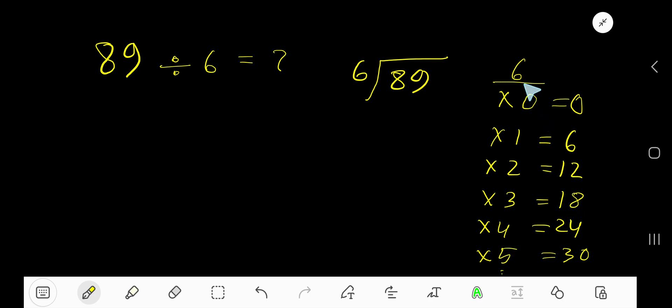To find the multiplication table of 6, just add 6 to the previous step. 0 plus 6 is 6. 6 plus 6 is 12. 12 plus 6 is 18. 18 plus 6 is 24.